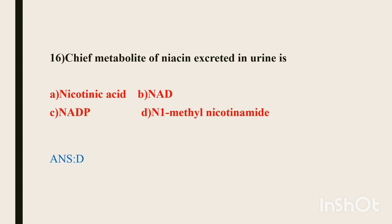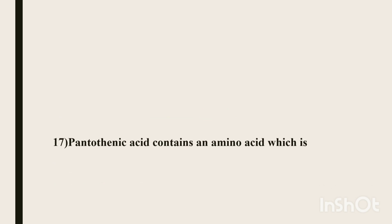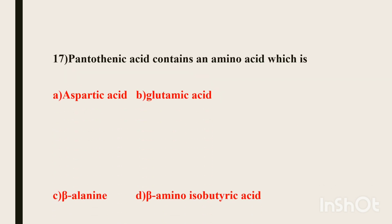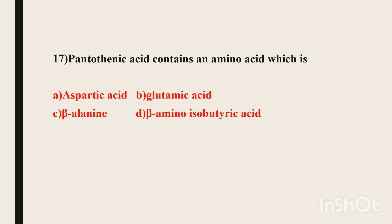Seventeenth question. Pantothenic acid contains an amino acid which is — Options: aspartic acid, glutamic acid, beta-alanine, beta-aminoisobutyric acid. Looking at the structure of pantothenic acid, the amino acid present is beta-alanine. Beta-alanine is the correct answer.